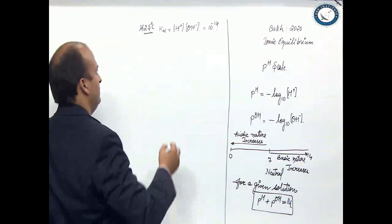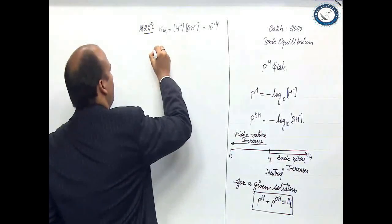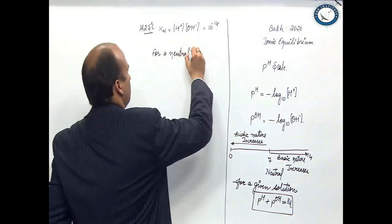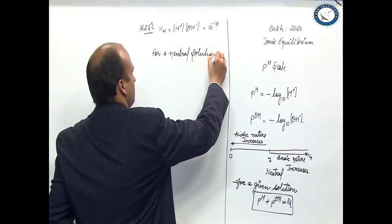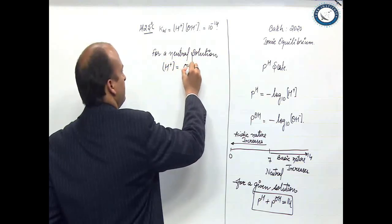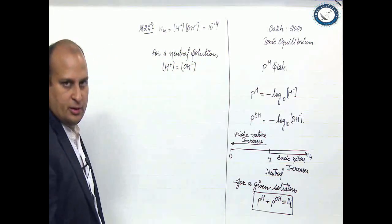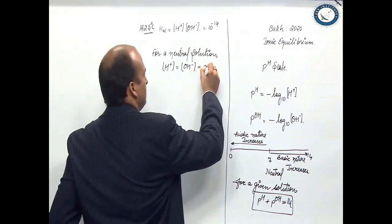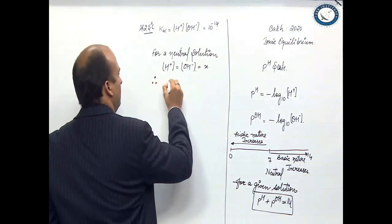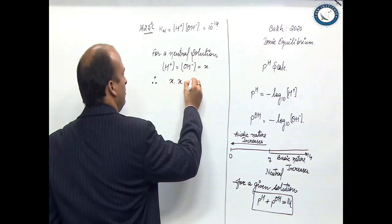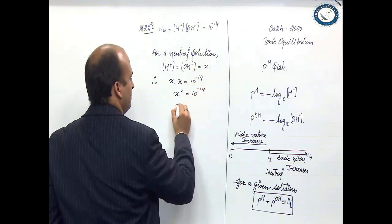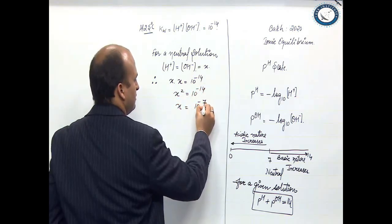For a neutral solution, the H plus concentration should be equal to the OH minus ion concentration. Let us say the value is x. Therefore, x into x is equal to 10 raise to the power minus 14, or x squared is equal to 10 raise to the power minus 14.